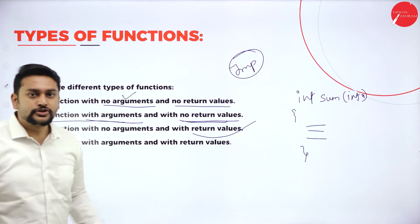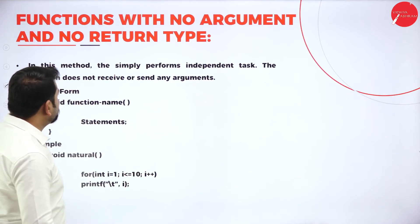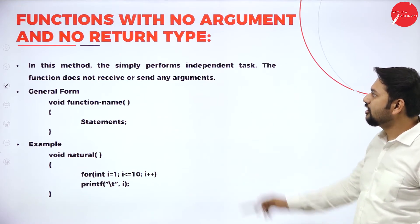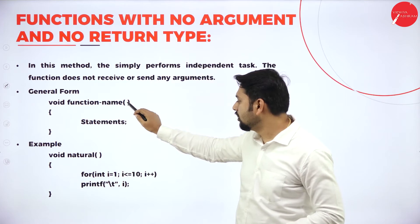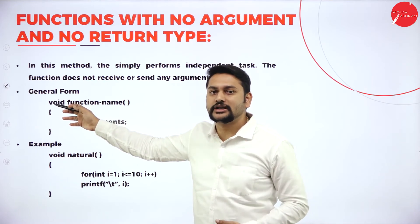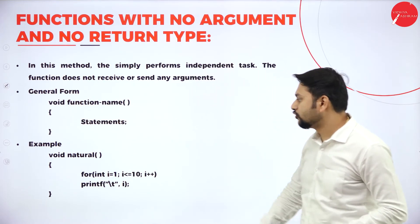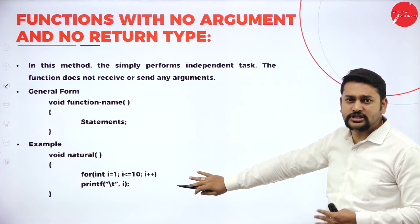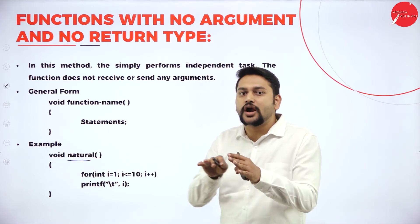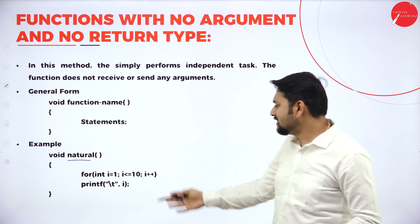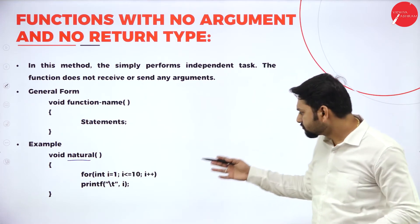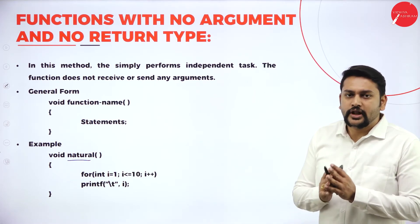Let's check these functions one by one. Please observe the function. Can you identify what type of function I have here? Function with no arguments — do I have arguments? No. Do I have a return type? Yes, I have void, but it's not returning anything. The function name is 'natural' and the return type is void. Inside this, I have some code which will be executing — I am just printing from 1 to 10.